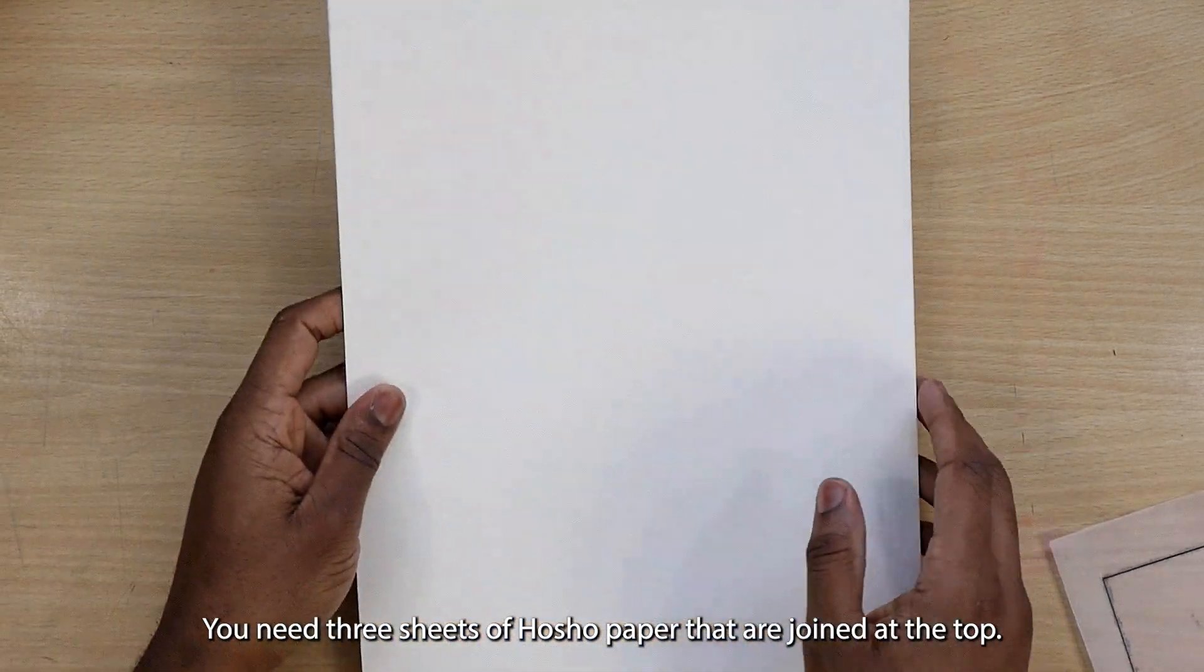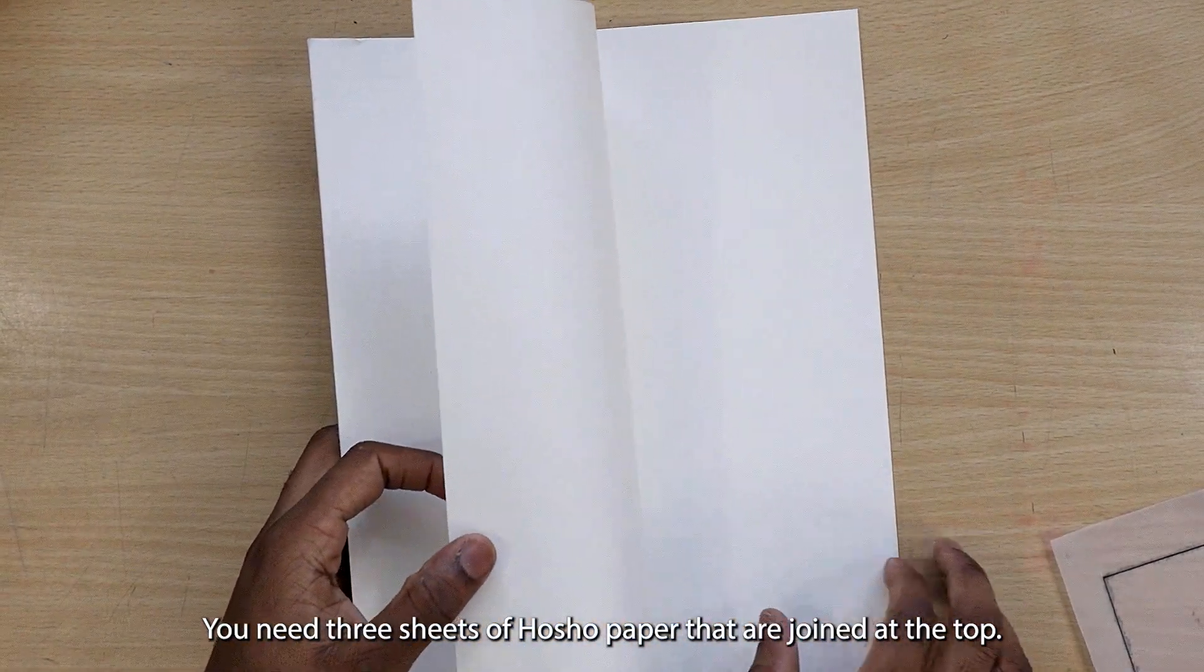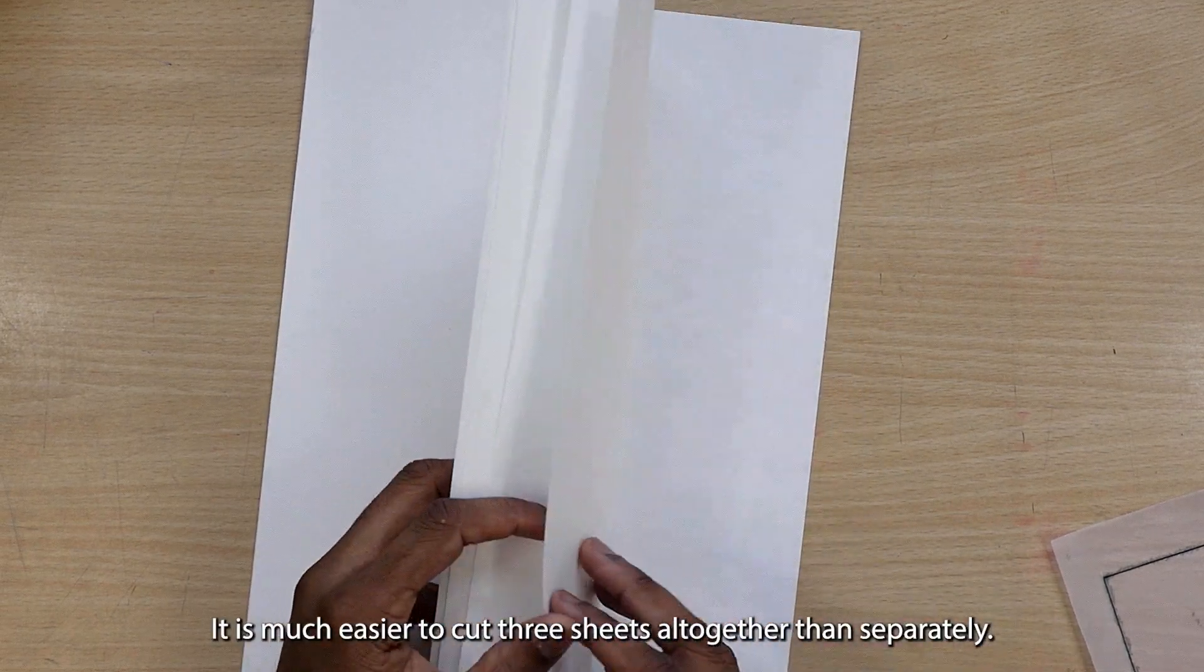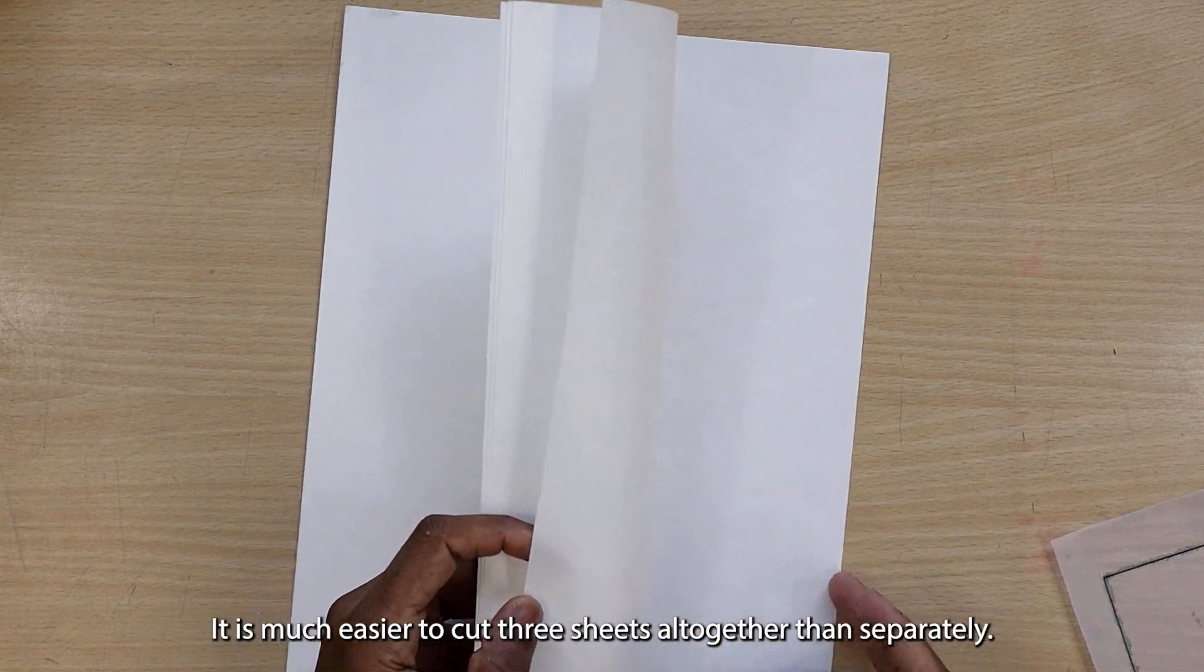You need three sheets of hosho paper that are joined at the top. Keep them joined. It is much easier to cut three sheets altogether than separately.